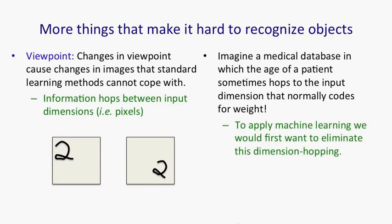I call that phenomenon dimension hopping, when information jumps from one input dimension to another. And that's what viewpoint does and it's something we need to fix. And preferably we'd like to fix it in a systematic way.